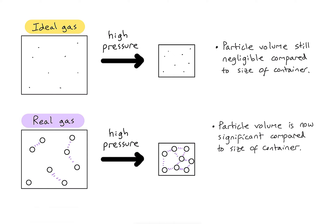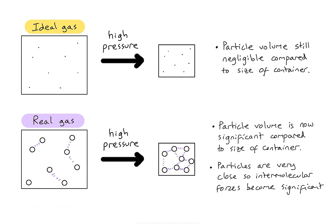The second effect of making the box smaller is that the particles are now much closer to each other than in the initial box. This causes more intermolecular forces between those particles, represented by more purple dashed lines. Because the particle volume is now very significant compared to the size of the box and there are many more intermolecular forces, the use of the ideal gas equation becomes invalid under these high pressure conditions.